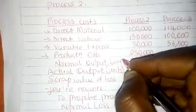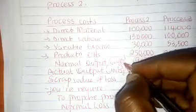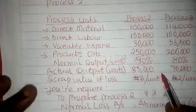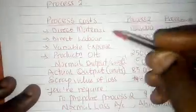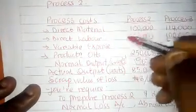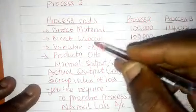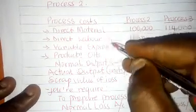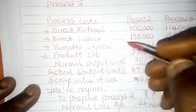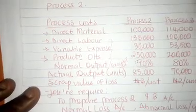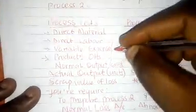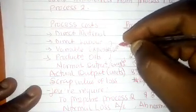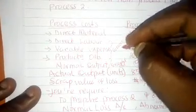The expected — that is the normal — expected output. Before we go further, the addition of direct labor, variable expenses, and production overheads — they are called conversion costs.